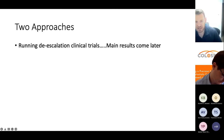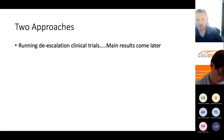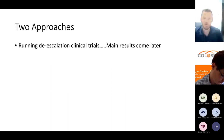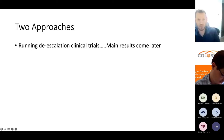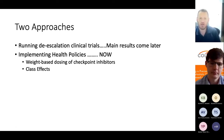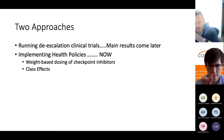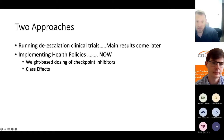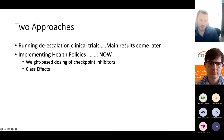There are two approaches in de-escalation: running de-escalation trials — studying lower doses, longer intervals — with main results coming in three to five years; or implementing health policies now and getting the benefit immediately. With the immediate approach, you need stronger data, but there are some things supported robustly by evidence where you can have the benefits now without waiting. I'm going to talk about two different policies: weight-based dosing of checkpoint inhibitors, and class effects.